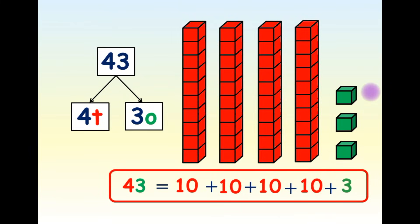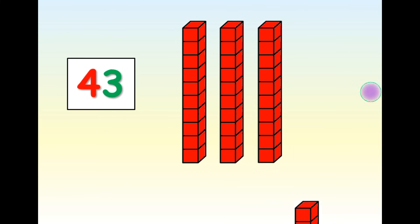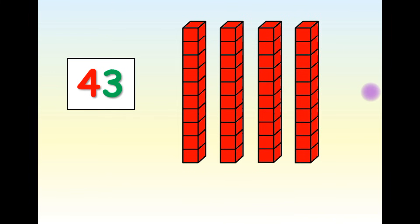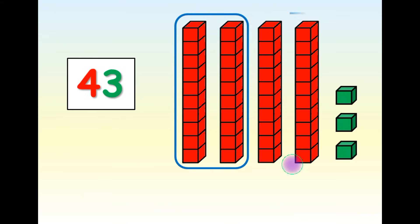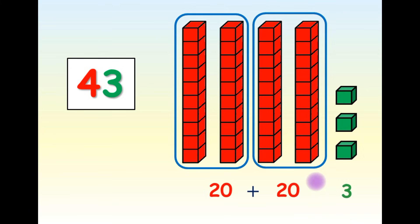We can also decompose it in a different way. We can separate 4 tens into 2 tens and 2 tens. We can add it like this: 20 plus 20 gives us 40, and plus 3 ones equals 43.